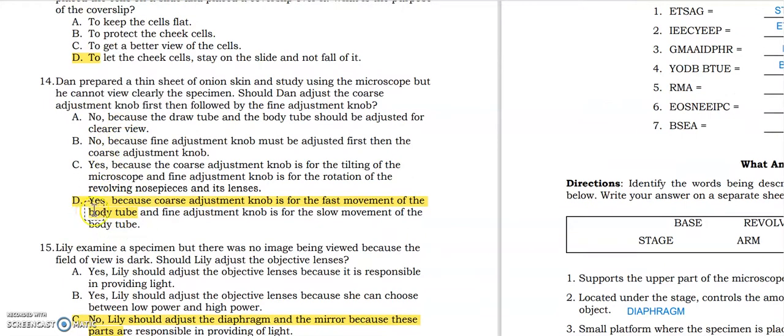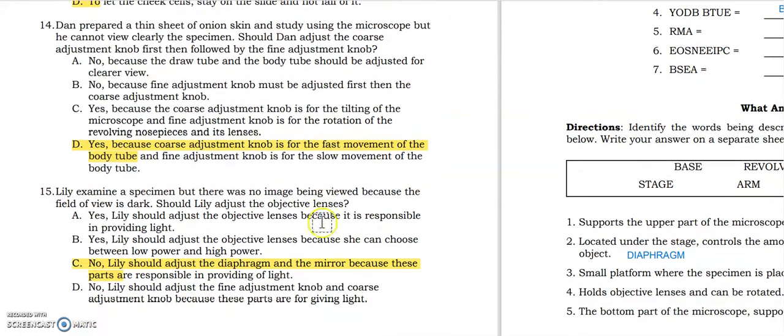Number fourteen, it's letter D. Yes, because coarse adjustment knob is for the fast movement of the body tube, and fine adjustment knob is for the slow movement of the body tube. Fifteen, it's letter C. No, Lily should adjust the diaphragm and the mirror because these parts are responsible in providing light.